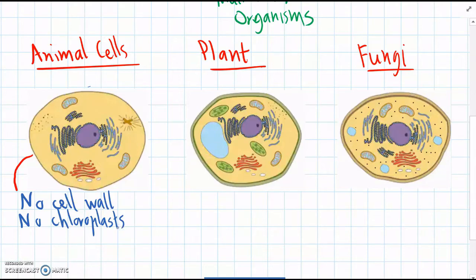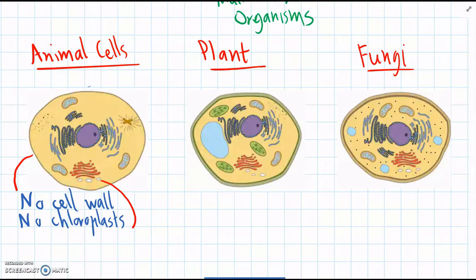Being an animal, we can't make energy from the sun — we need to eat food. We can also see there are none of those green chloroplasts which do photosynthesis. And lastly, if an animal cell does have vesicles, they're always quite small. Remember, vesicles store different chemicals and isolate them, keeping them separate.